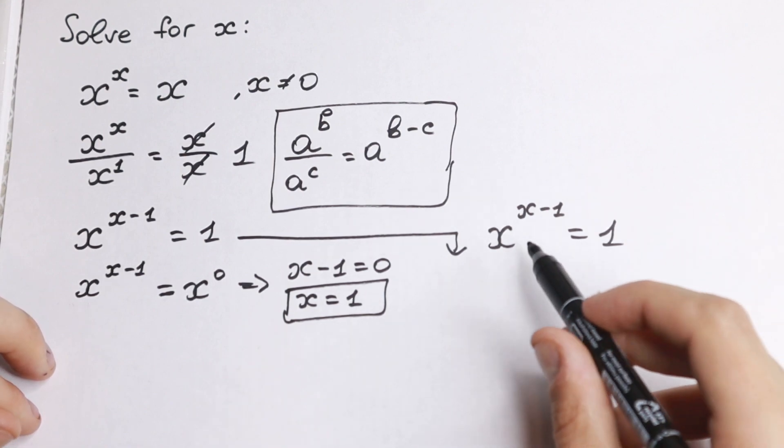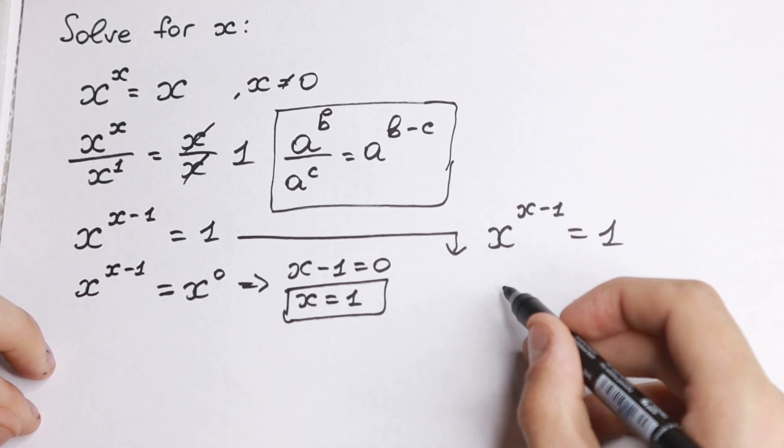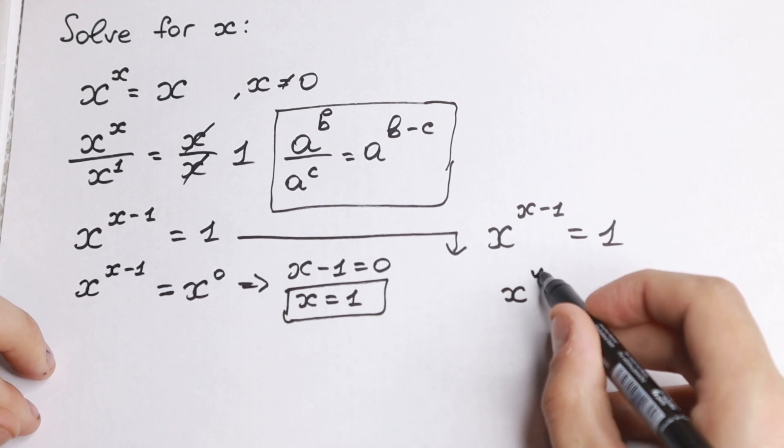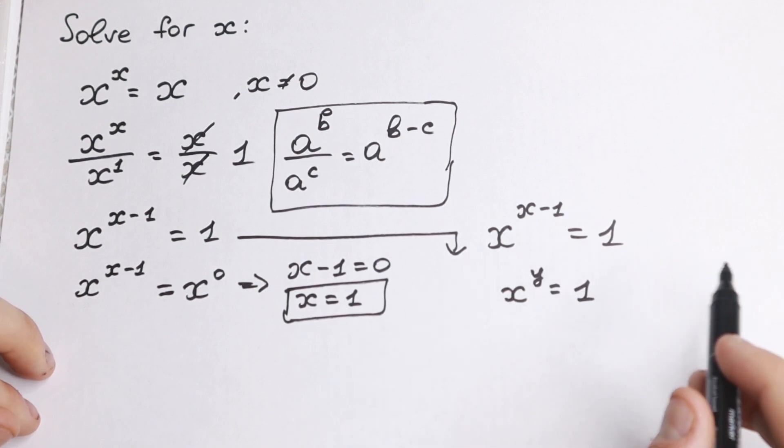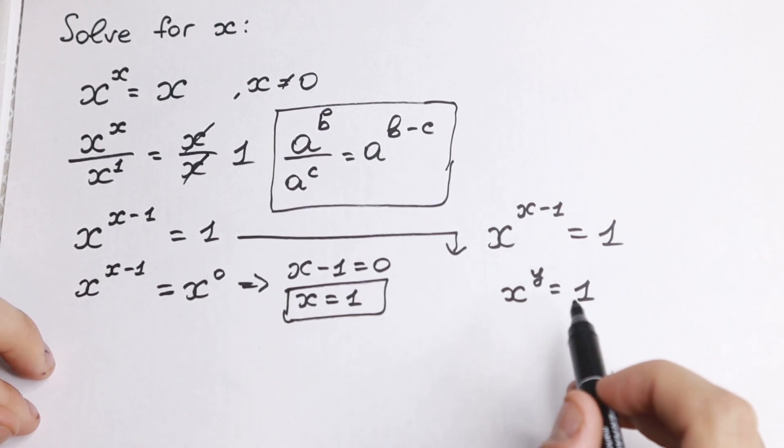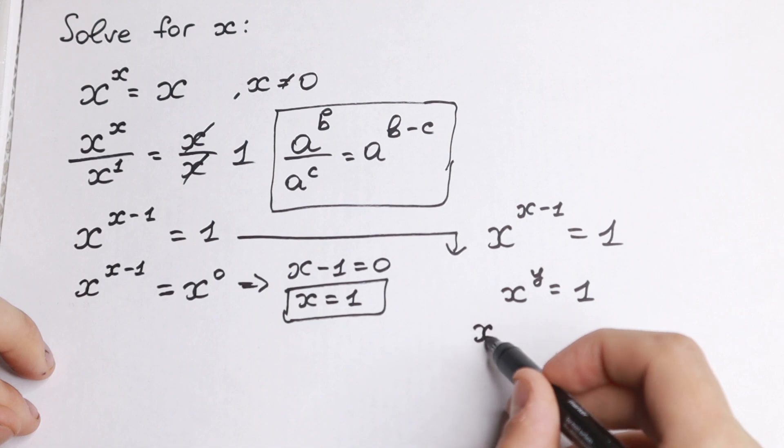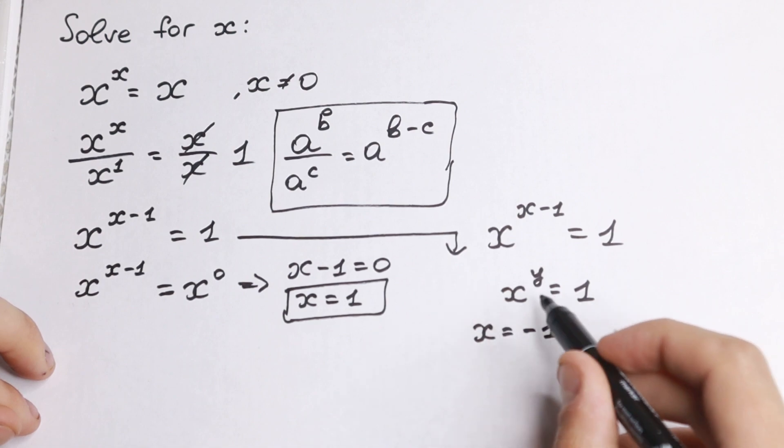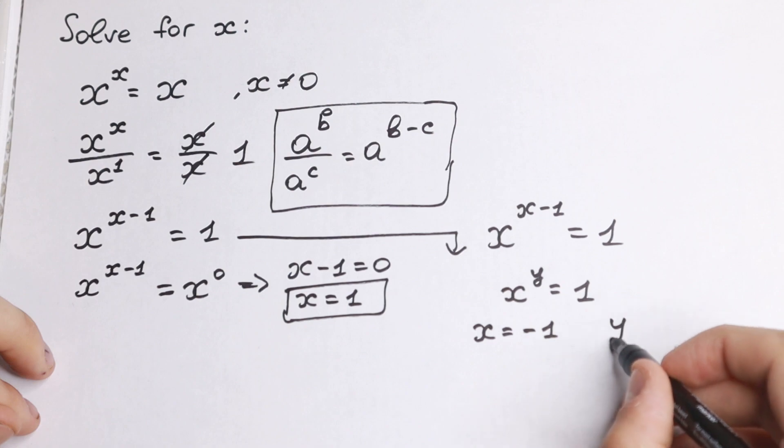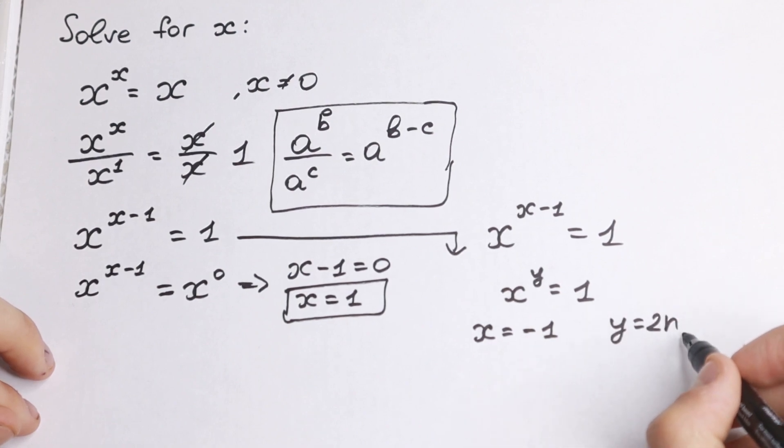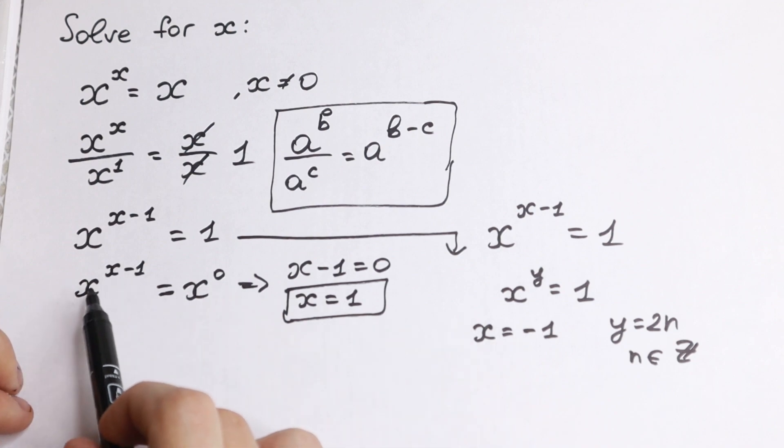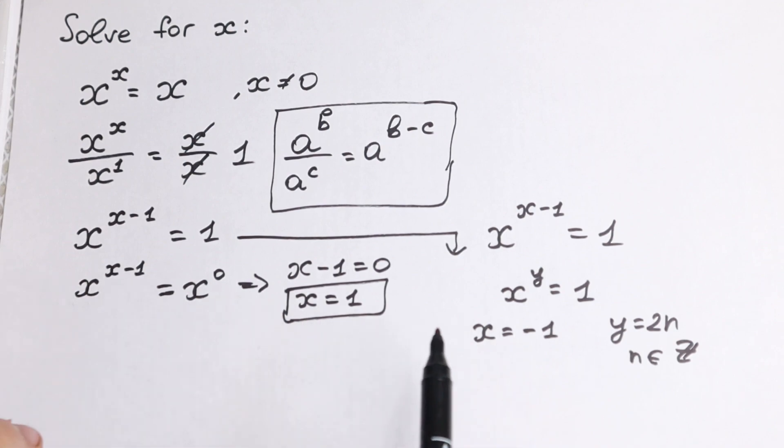And take a look closely. This looks like a function x to the power y equal to 1. And this function has one other root of x, because x can be equal to minus 1 when y is an even number. When y is equal to, for example, 2n, n is the set of whole numbers, n is in Z. And x can be equal to minus 1 right here. And let's check our case.